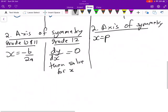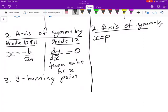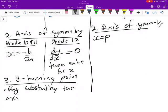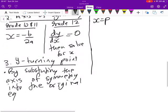Okay. So I think we are going well. Number three, we want to look at the y turning point. And in the first scenario, the y turning point, it is found by substituting the axis of symmetry into the original equation.